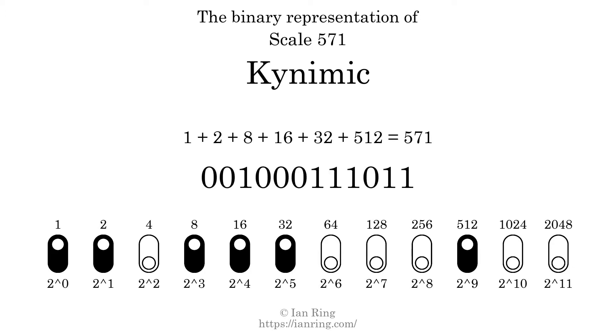Represented as a binary number in base 2, the scale number is 0, 0, 1, 0, 0, 0, 0, 1, 1, 1, 0, 1, 1, 1, 0, 1, 1.